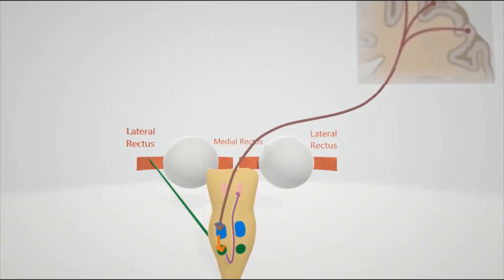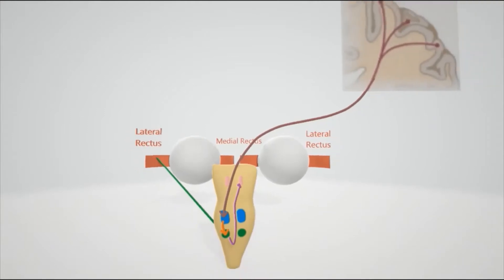So what happens is, let's say a person decides he wants to look to the left. The motor cortex sends a signal to here, to the blue area, first to the PPRF, the paramedian pontine reticular formation, which sends a signal to the abducens.